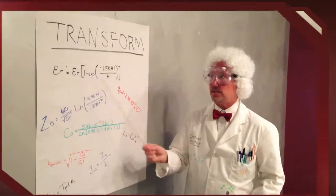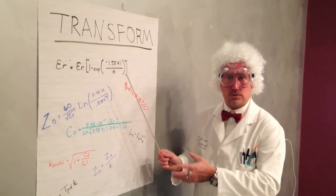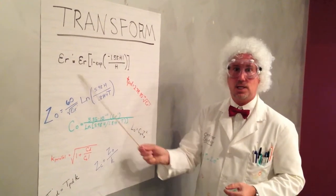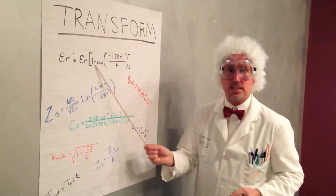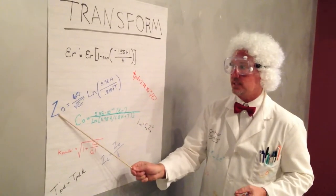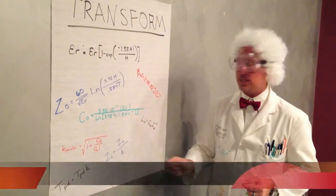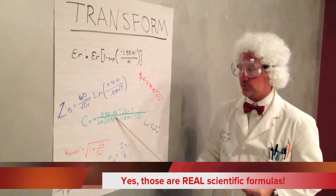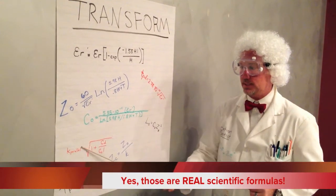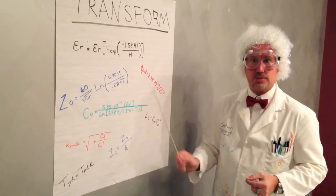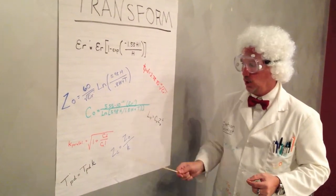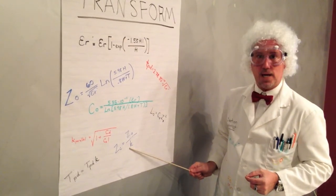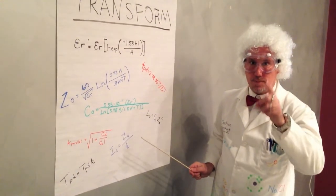The equations for transforming are very important to science. We see that ER transforms into this amazing number right here. Zinc oxide transforms into this right here. TPD transforms this. CO transforms to this. K parallel transforms to this, which you all understand will lead us to ZC equals ZO over K, which you all must remember.